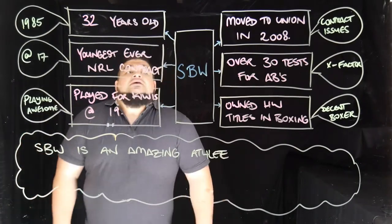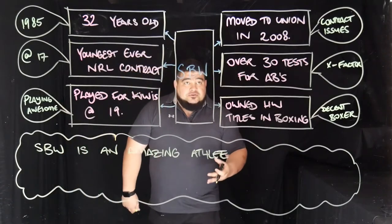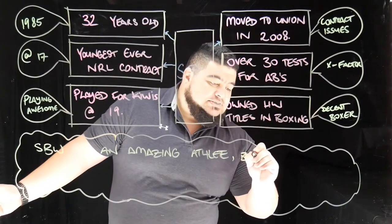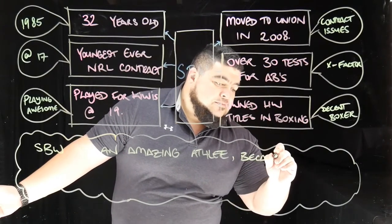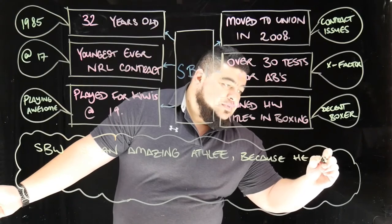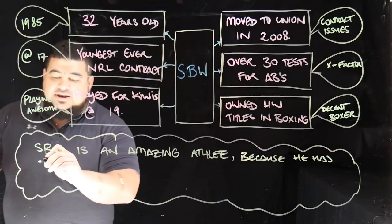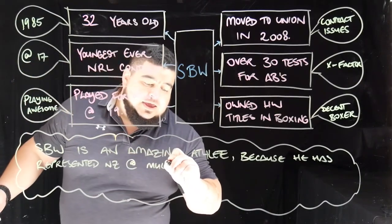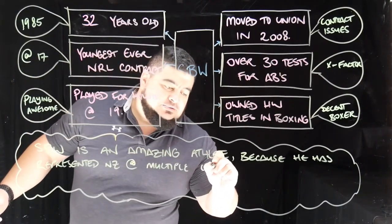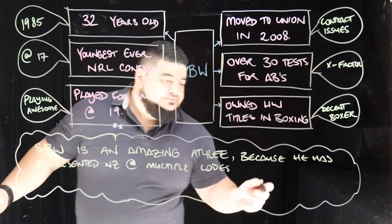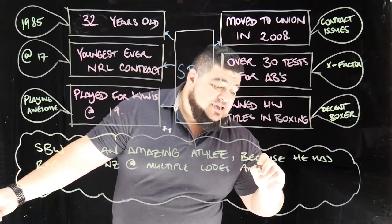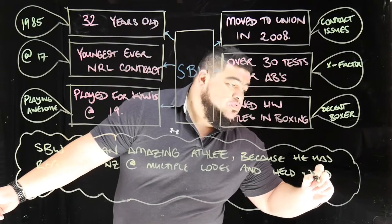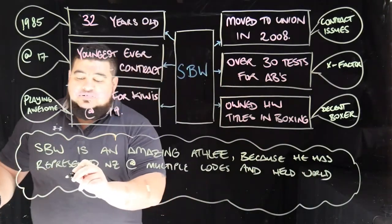We've got our statement, and now we have to back it up and justify it. We can pick anything from the map — for example: because he has represented New Zealand in multiple codes, and a second justification: he has held world boxing titles.